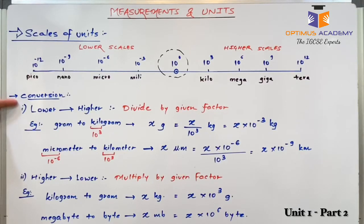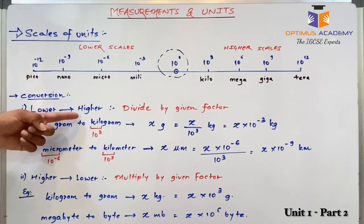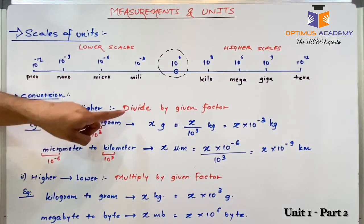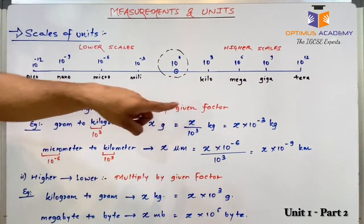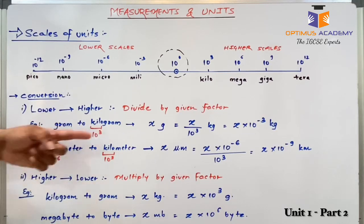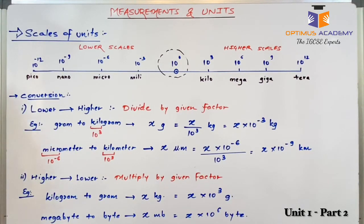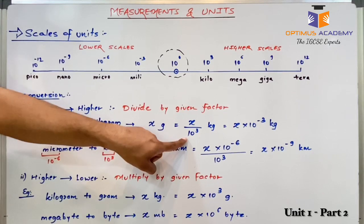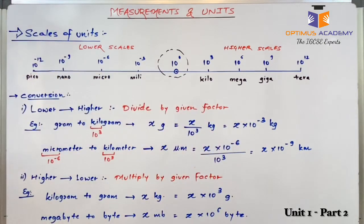We will now discuss about conversion of units from one system into another. The first conversion is lower to higher — that is, converting a lower unit into a higher one. To do that, we have to divide the given number by the factor of the unit into which we want to convert. For example, if I want to convert gram to kilogram, the factor for kilo is 10 raised to 3. So whatever value is given in grams, I divide by 10 raised to 3, giving x times 10 raised to minus 3 kilogram.